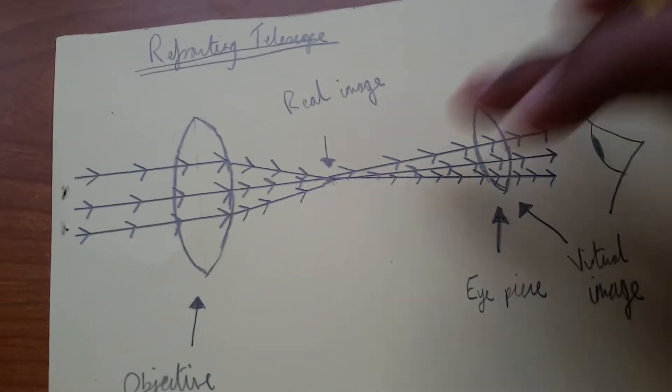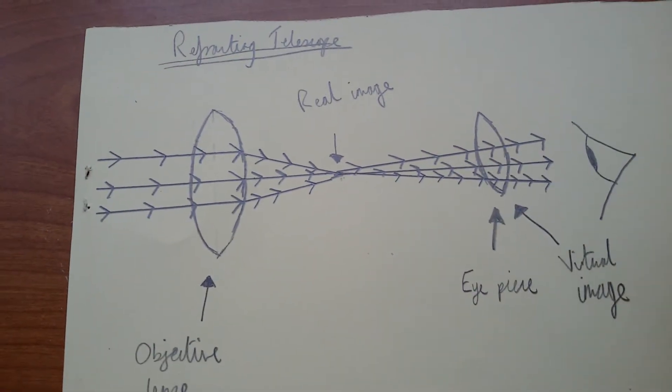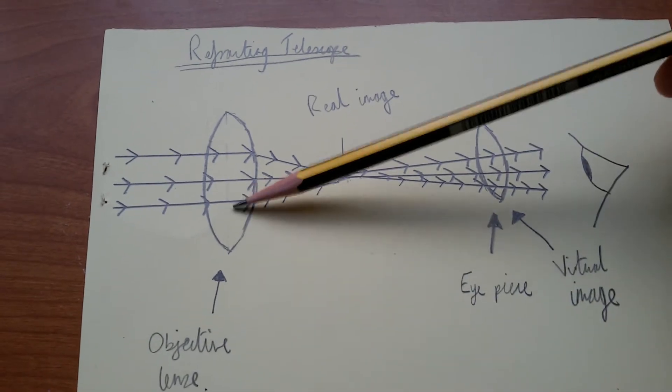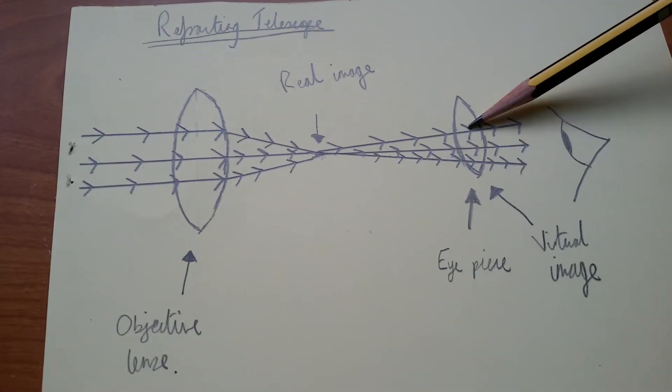So here is the diagram which I've drawn of this refracting telescope. As you can see, this is the objective lens and this is the eyepiece.